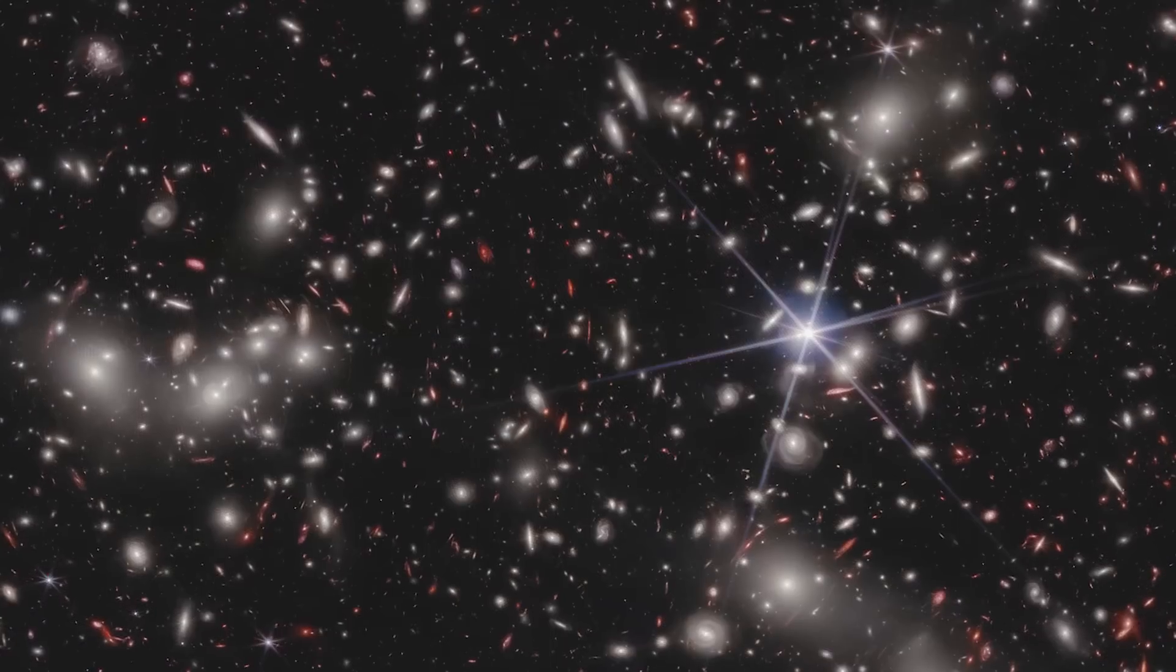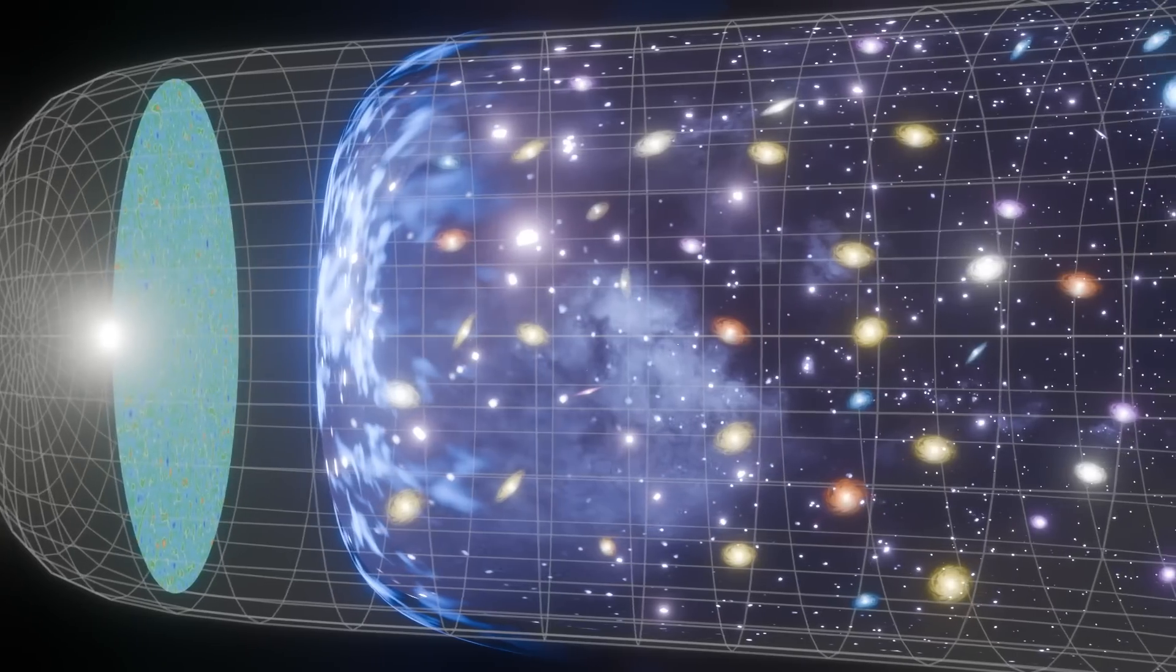So, what evidence did astronomers find against dark matter? How does it highlight a flaw in our theory of gravity and our current model of the universe? Finally, and most importantly, if dark matter doesn't exist, what explains the decades of related observations made in the cosmos?